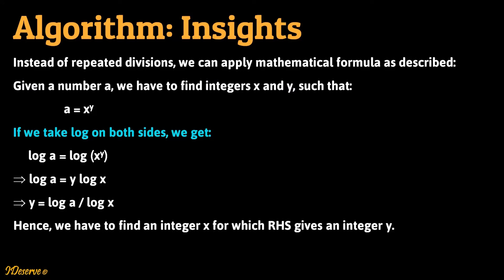Let's take log on both sides. So we get log a is equal to log of x raised to y which is same as log a equal to y multiplied by log x which can also be written as y equal to log a by log x. Hence we have to find an integer x for which RHS gives an integer y.